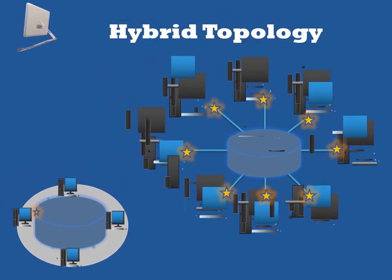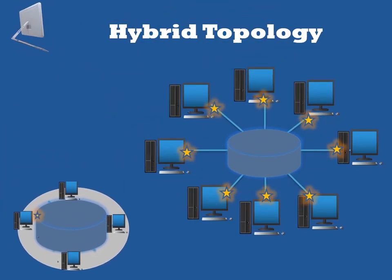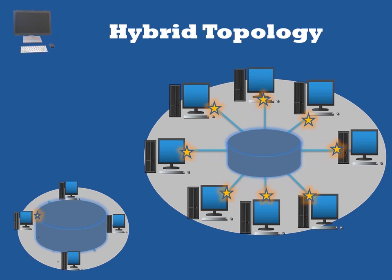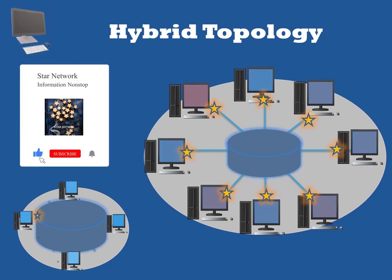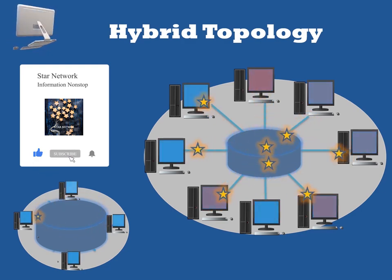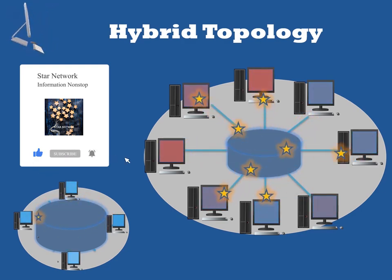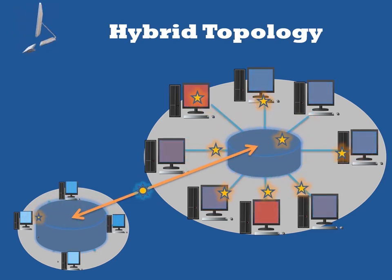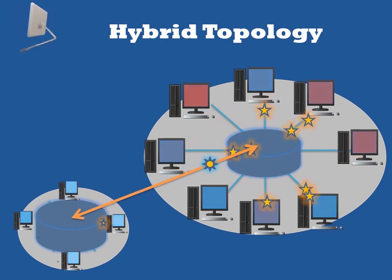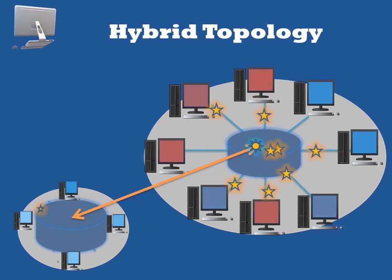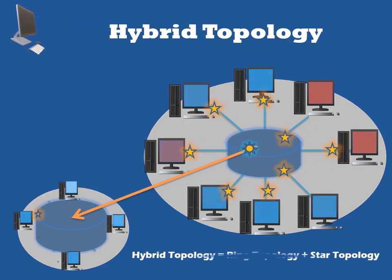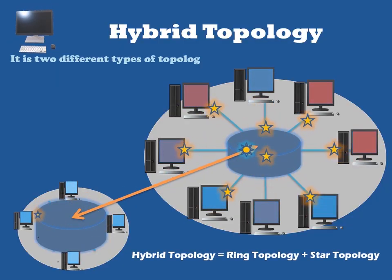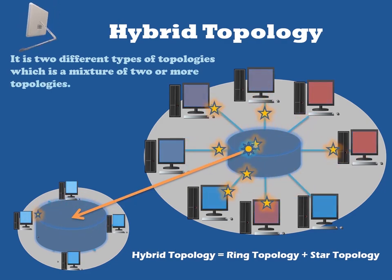Hybrid topology is an interconnection of two or more basic network topologies, each of which contains its own nodes. The resultant interconnection allows nodes in a given basic topology to interconnect with other nodes in the same basic topology as well as those in other basic topologies within the hybrid topology. Advantages of a hybrid network include increased flexibility, as new basic topologies can simply be added or existing ones removed, and increased fault tolerance.